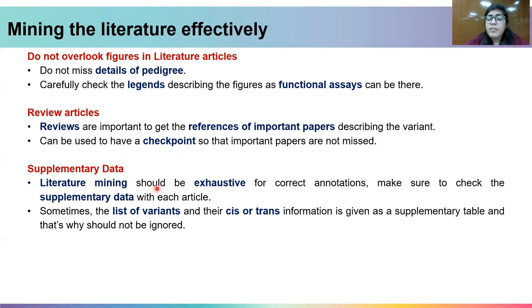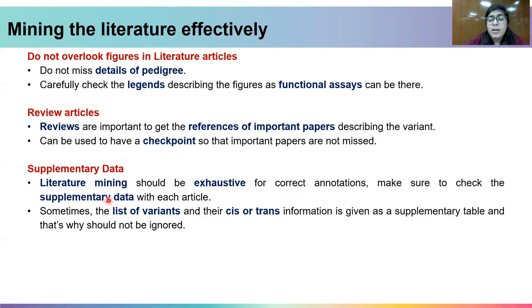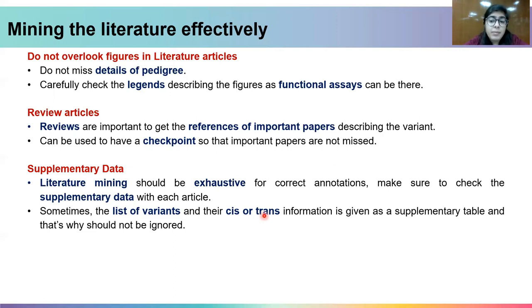Literature mining should be very exhaustive for correct annotations, and this includes making sure to check the supplementary data given along with each article. For example, sometimes a list of variants and their cis or trans information is not present in the main text but can be given as a supplementary table, so you should not ignore that.